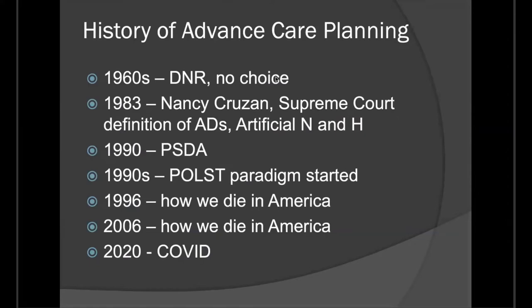In 1960, when a person was made DNR, they had no choice — the doctor basically wrote it on a chalkboard, and invariably the people made DNR were people of color and women. That changed after 1983 when the Nancy Cruzan case went to the Supreme Court, which defined advanced directives and established that an NG tube is a medical procedure — artificial nutrition and hydration. In 1990, the Patient Self-Determination Act came out, which brought advanced directives to the forefront, and that was also around the time that POLST started.